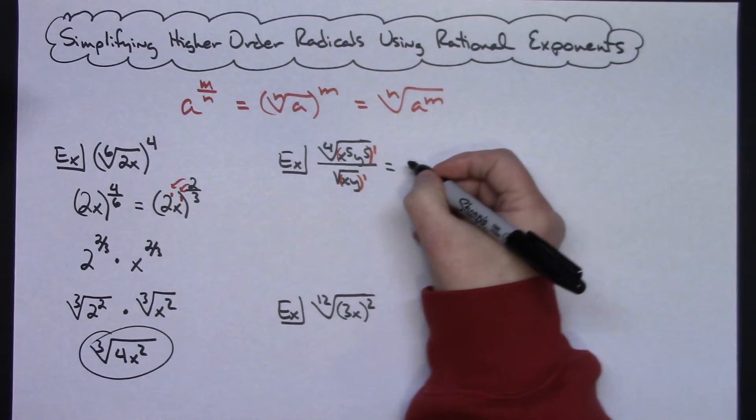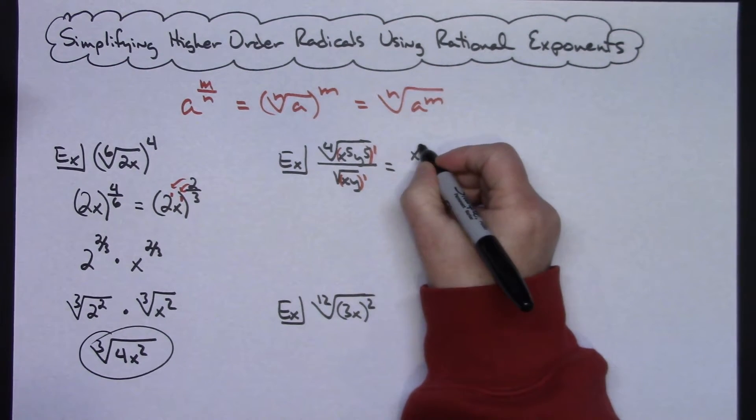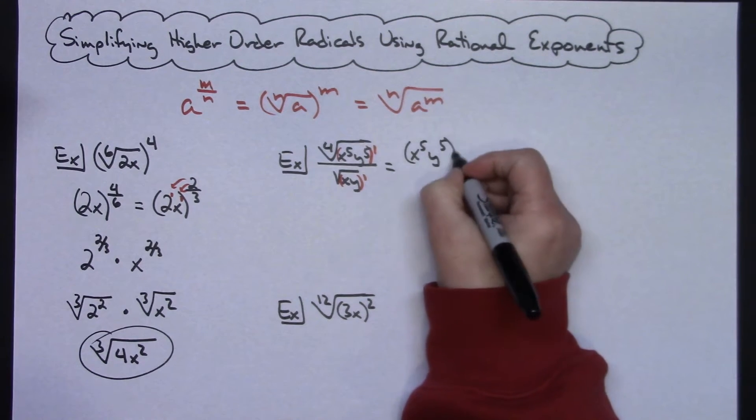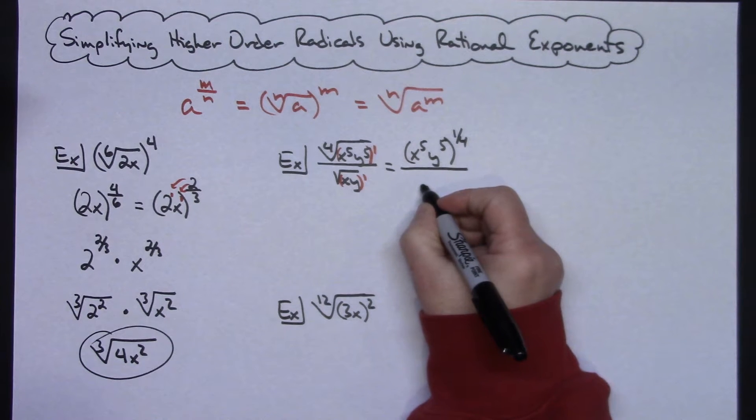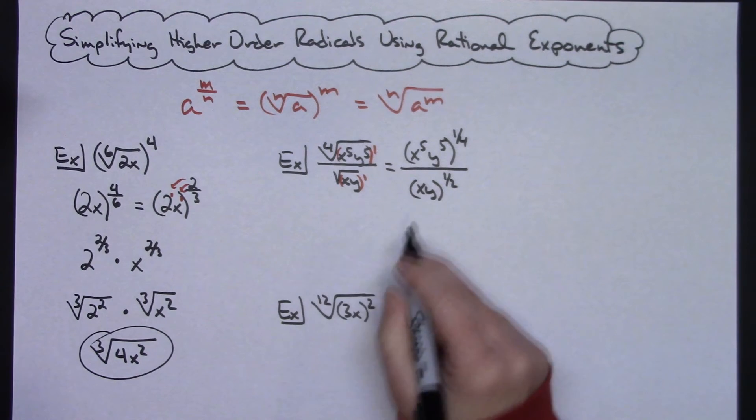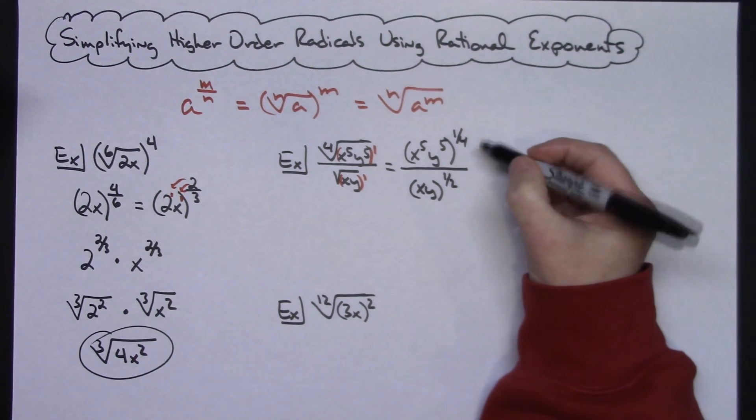So when I do that first step, then I would have x to the fifth, y to the fifth, and it's all raised to the 1/4 power. And then on the bottom I would have x, y all raised to the 1/2 power, square root with that 2 in the bottom right there.